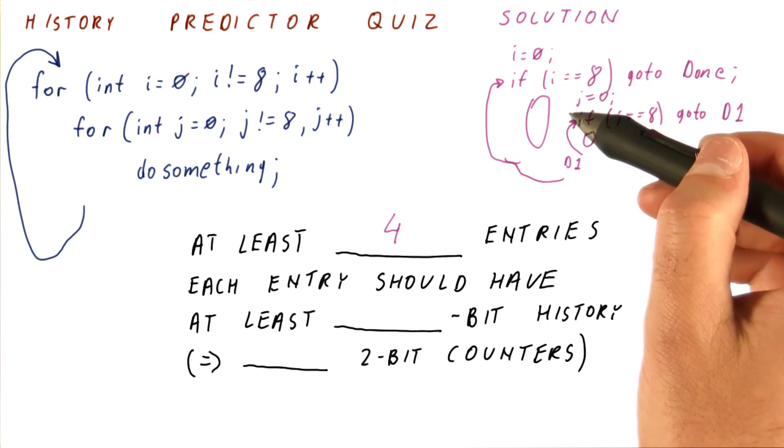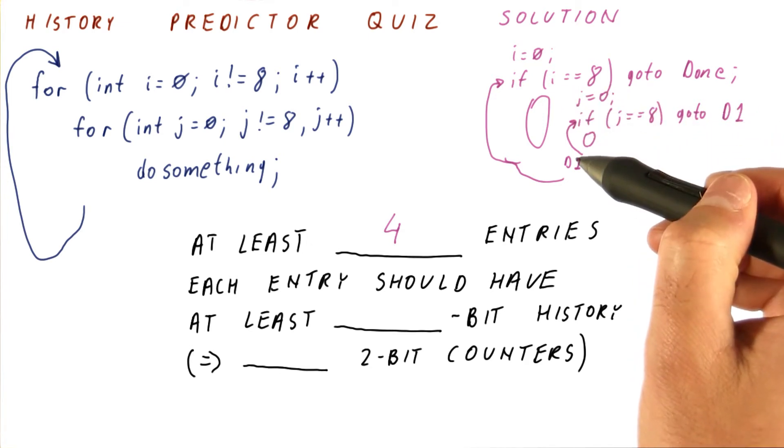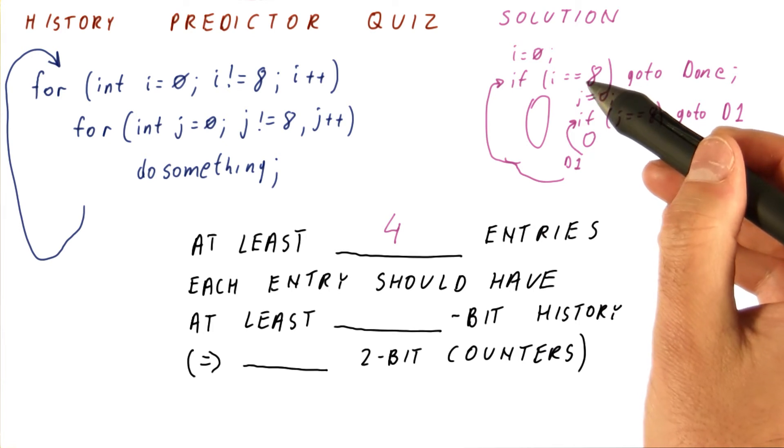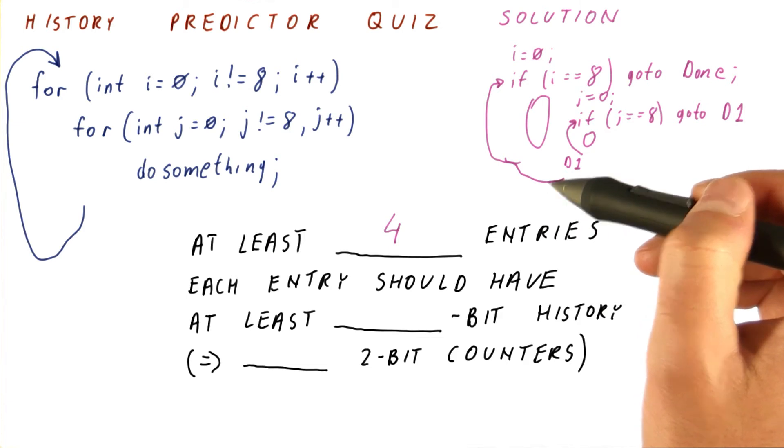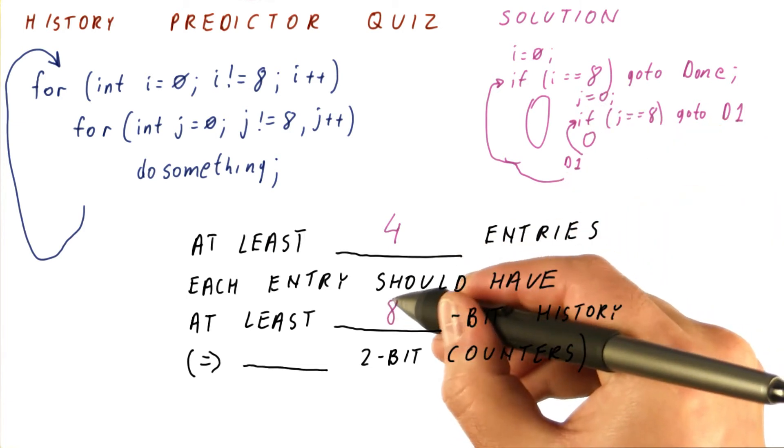But this one will be testing eight times for zero through seven and stay in the loop, and then the ninth time it tests, it jumps out. So really it has a pattern of length nine, which means we need an eight-bit history.